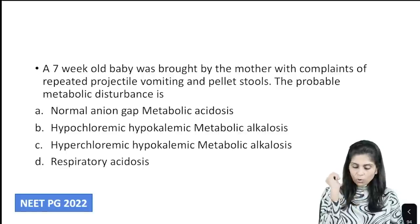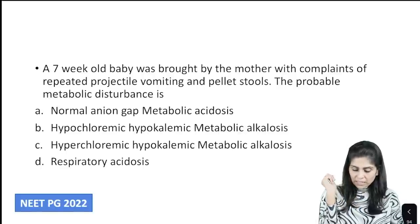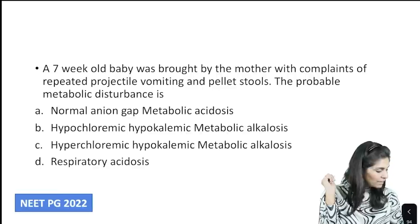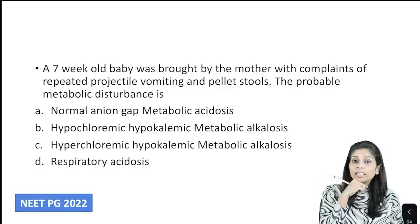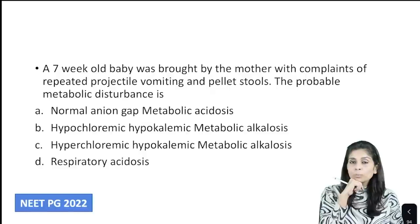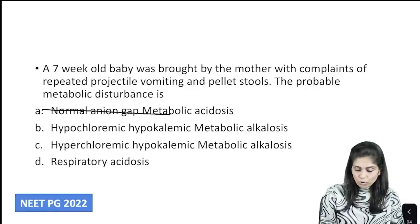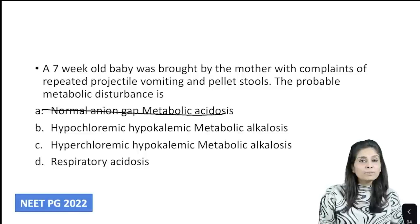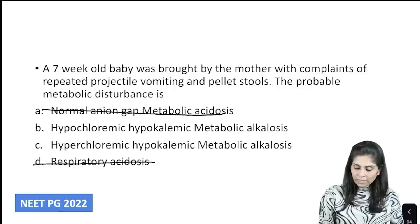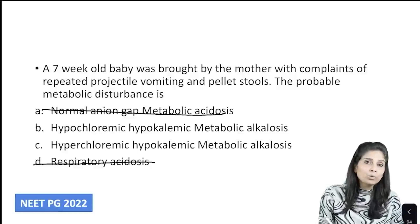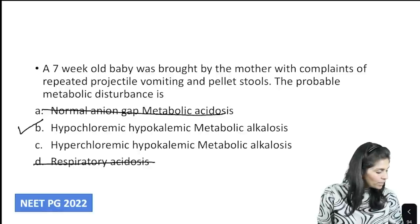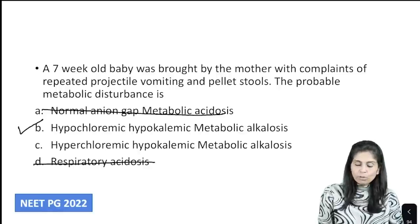A 7-week-old boy was brought by his mother with complaints of repeated projectile vomiting and pellet stools. With repeated vomiting, does vomiting cause metabolic acidosis? No. Vomiting causes metabolic alkalosis — not respiratory acidosis. And in this metabolic alkalosis, will the patient be hypochloremic or hyperchloremic? It is going to be hypochloremic. So the diagnosis is hypochloremic, hypokalemic metabolic alkalosis.